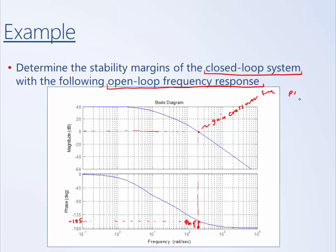So the phase margin, where we sometimes use the symbol phi, is approximately 25 degrees.